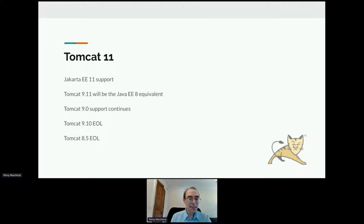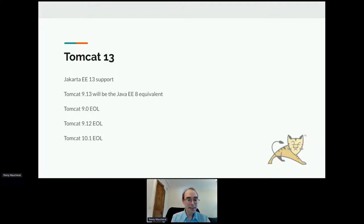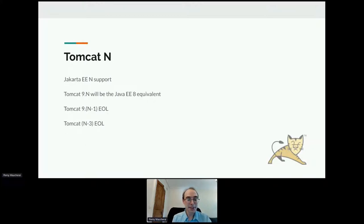Next we'll move to Tomcat 11 with Jakarta EE 11 support, and also have a Tomcat 9.11 branch. Tomcat 9.0 support will continue, while Tomcat 9.10 and Tomcat 8.5 will be EOL when Tomcat 11 is released. Then we'll move to Tomcat 12 with Jakarta EE 12, and Tomcat 9.12. This pattern continues through Jakarta EE 13, at which point Tomcat 9.0 is expected to reach end of life unless there is further interest and available manpower.